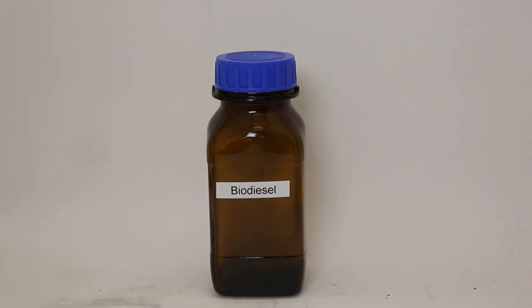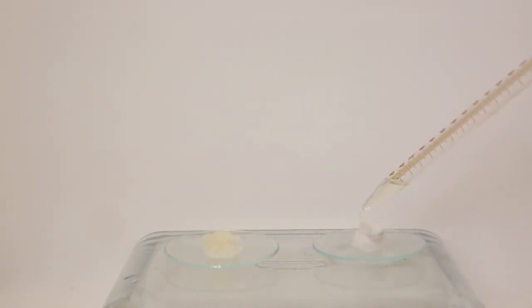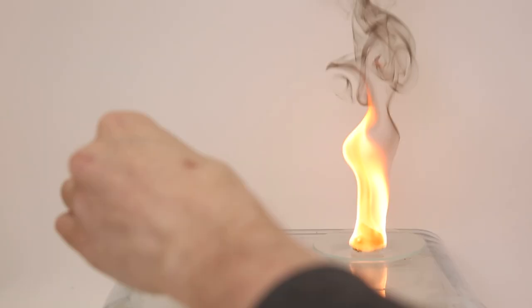So after leaving the biodiesel to cool, it is again a clear yellow liquid, which again, I will test with the same method. So I set up two watch glasses again with a cotton ball on top, and add my original biodiesel to the right, and on the left, my further purified biodiesel. The purified biodiesel is a bit more difficult to ignite, so the toluene is definitely helping the other.